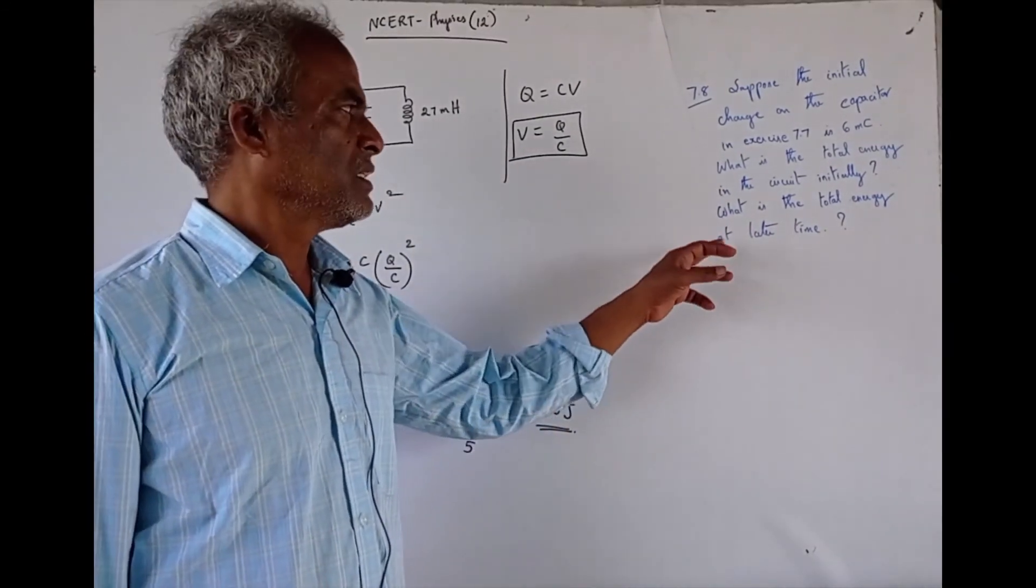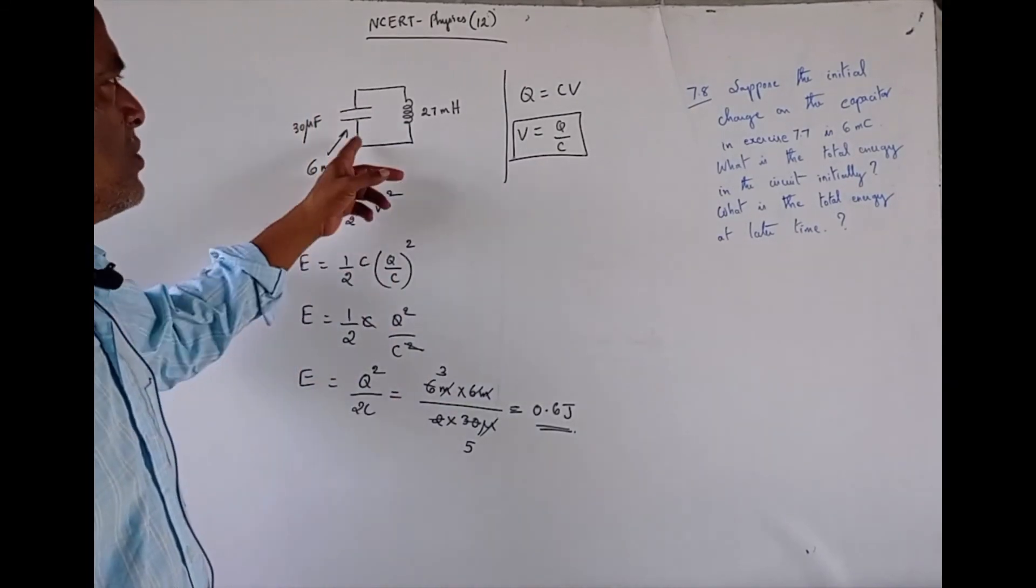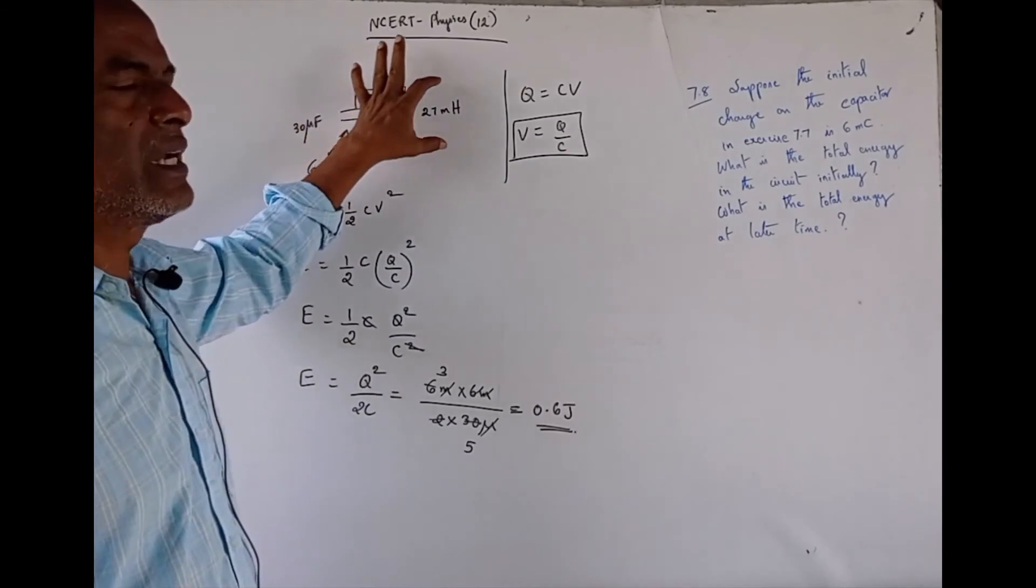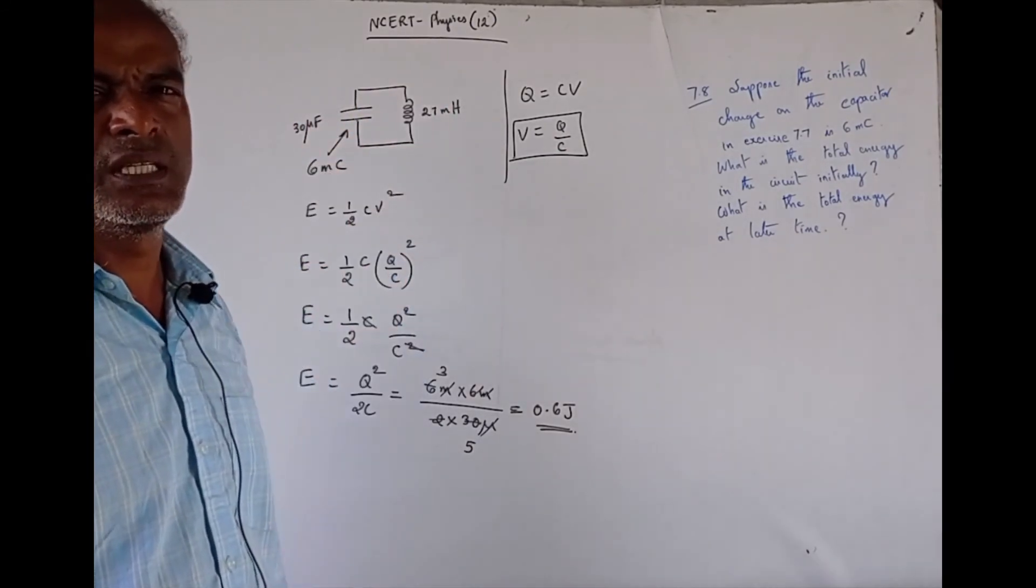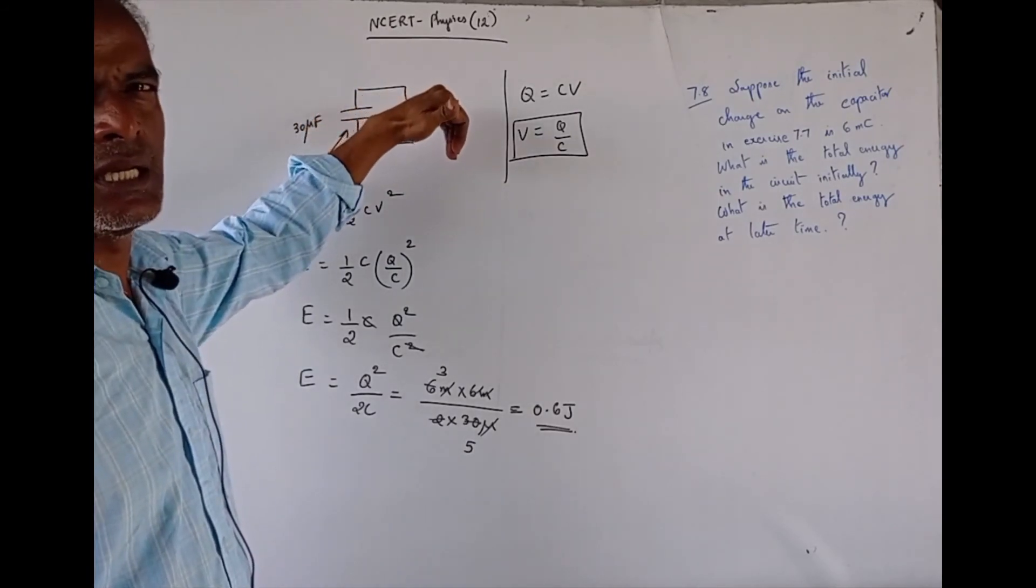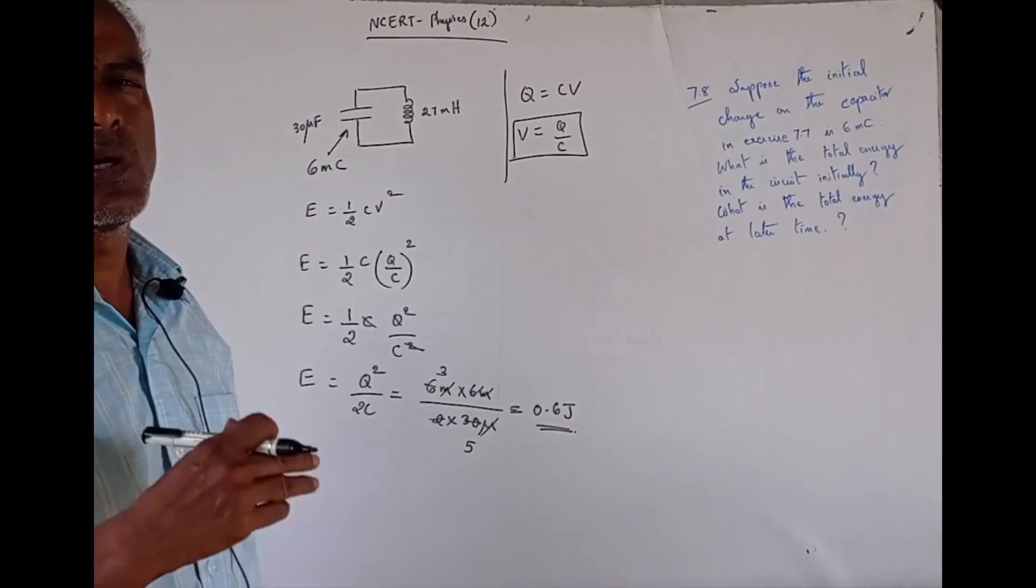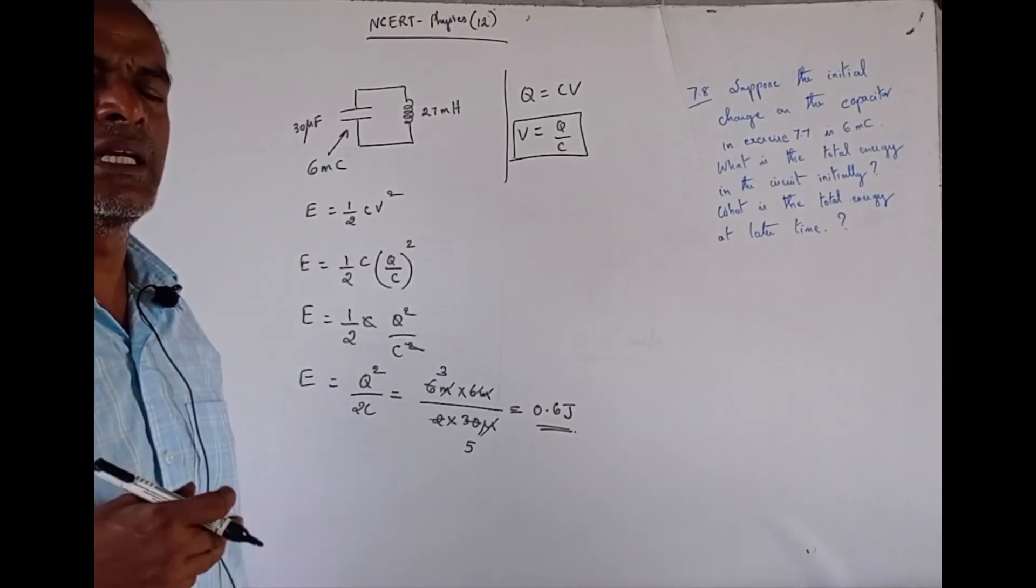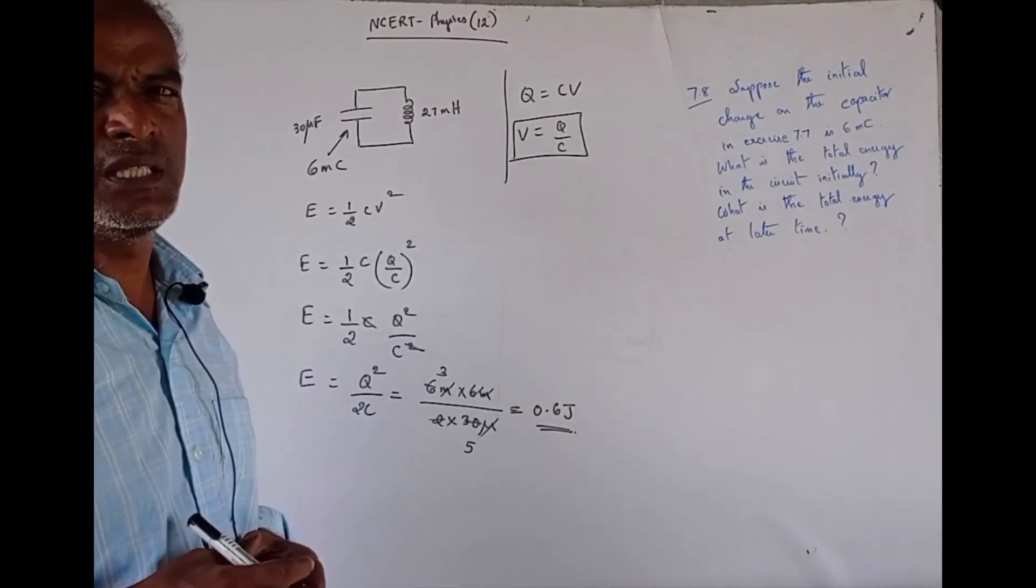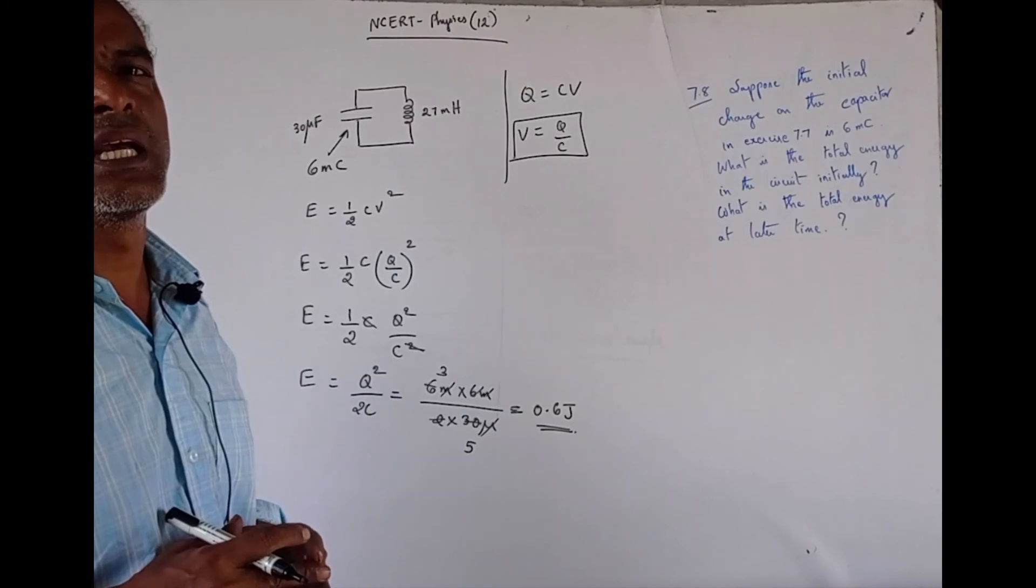The second part of the question is, what is the total energy at later time? See, here we do not see any resistance. So, ideally, this is an ideal capacitor, ideal inductor. So, there is no loss in energy. So, the energy from capacitance is transferred to inductance. And once again, it reverses back to capacitance. Therefore, oscillation is produced. So, later time also, the energy will be same. There is no loss in energy. It remains same because we deal with ideal capacitor and ideal inductor.